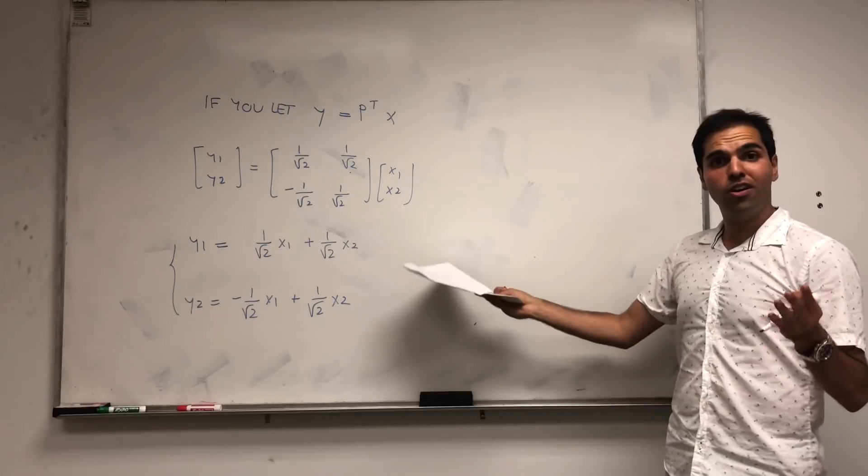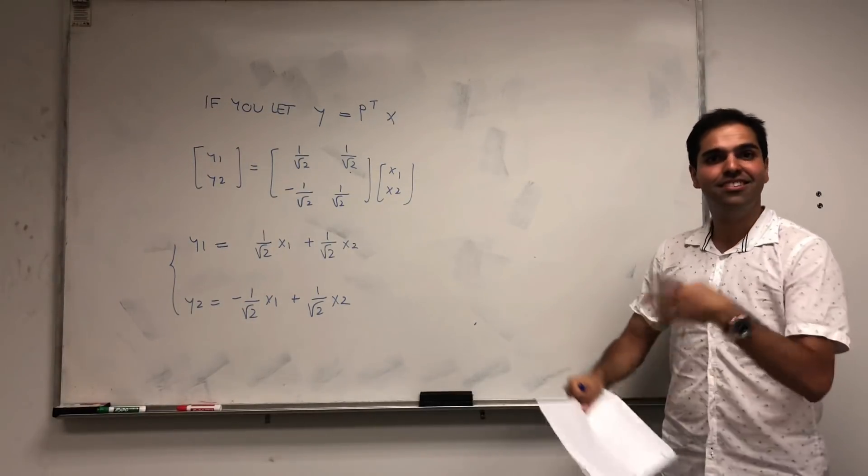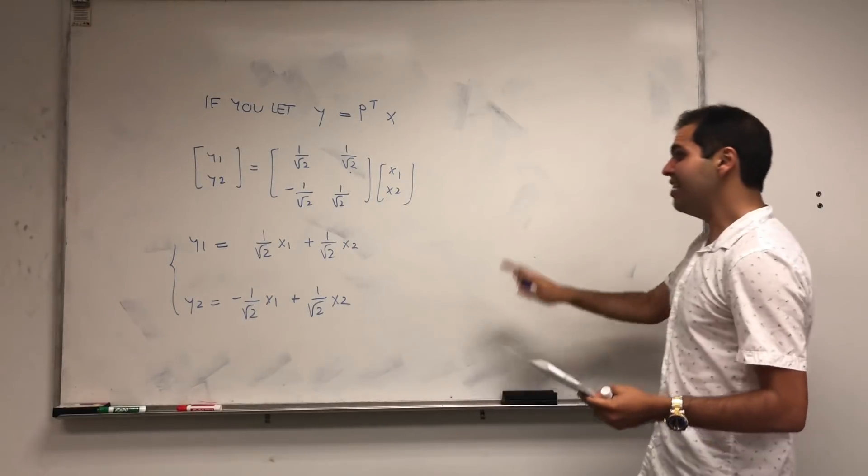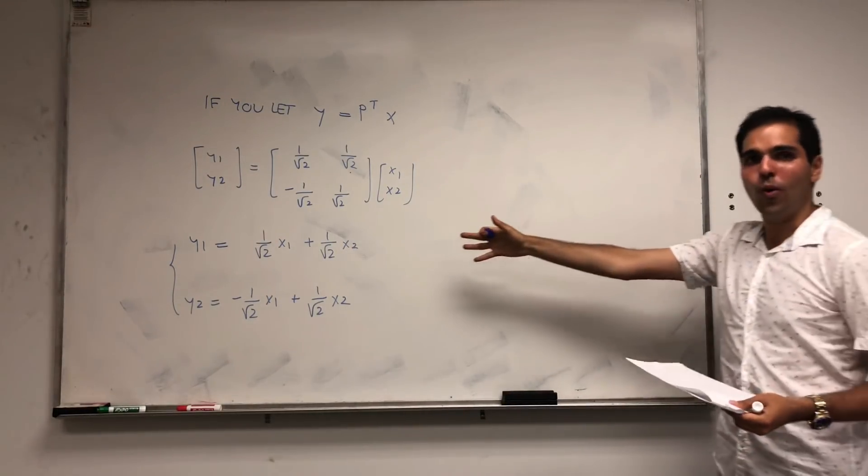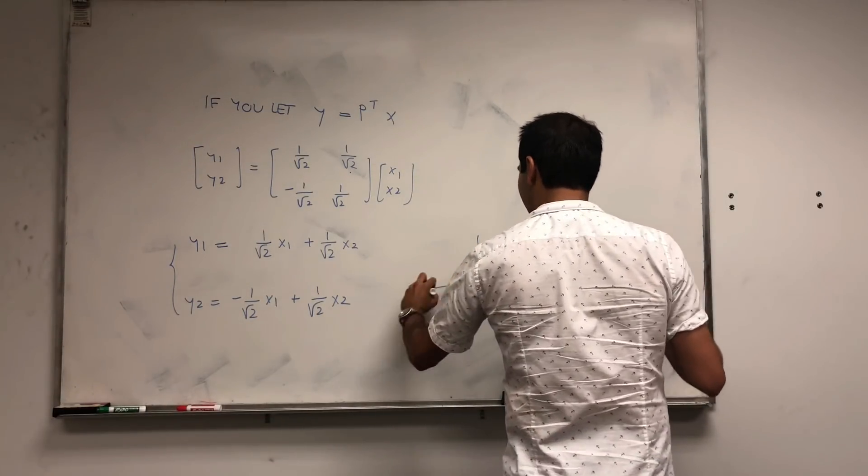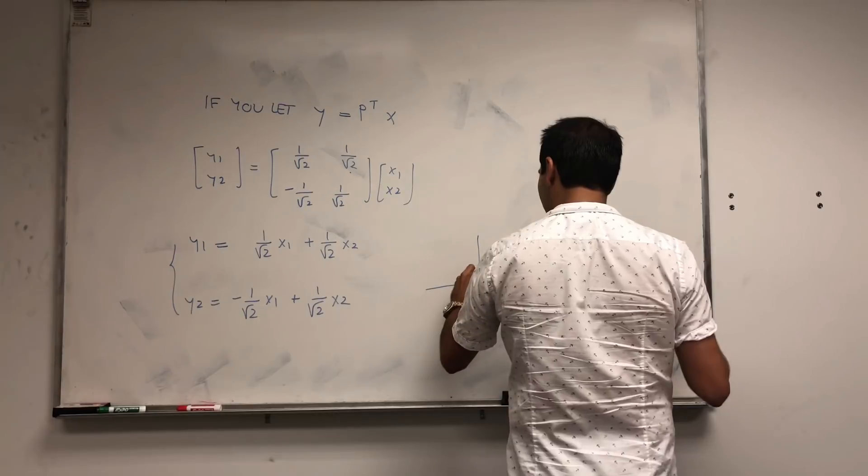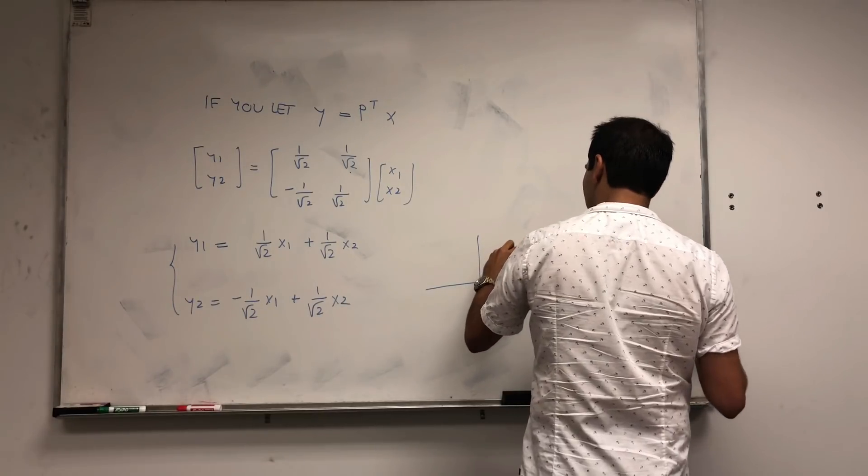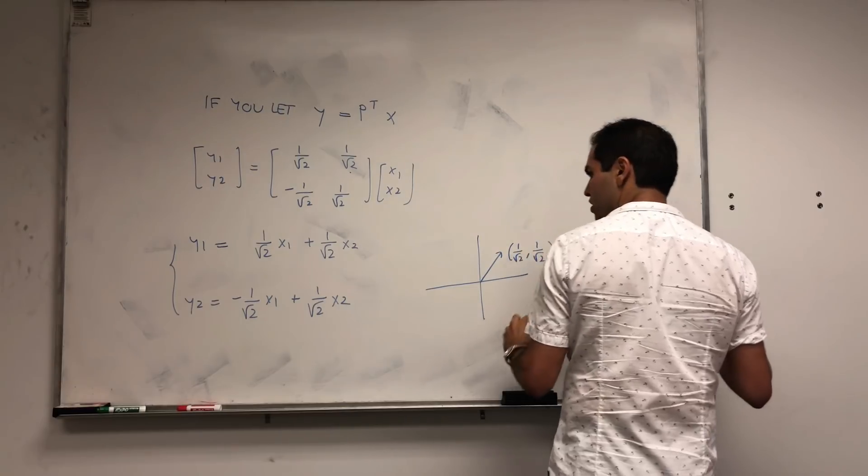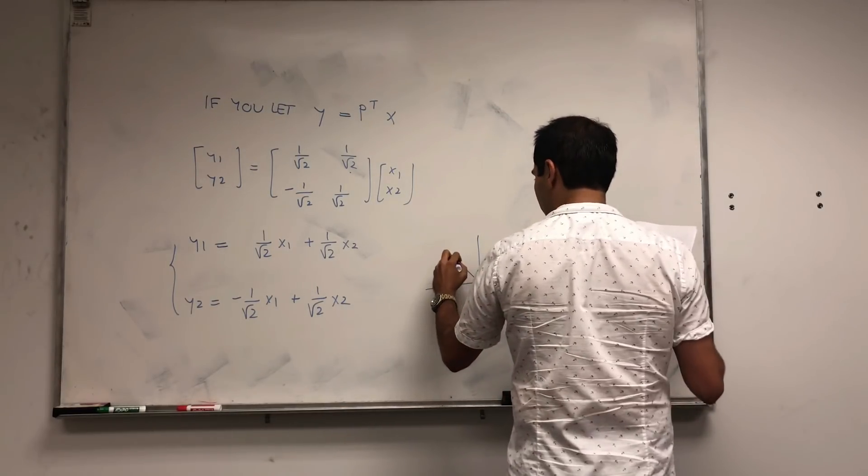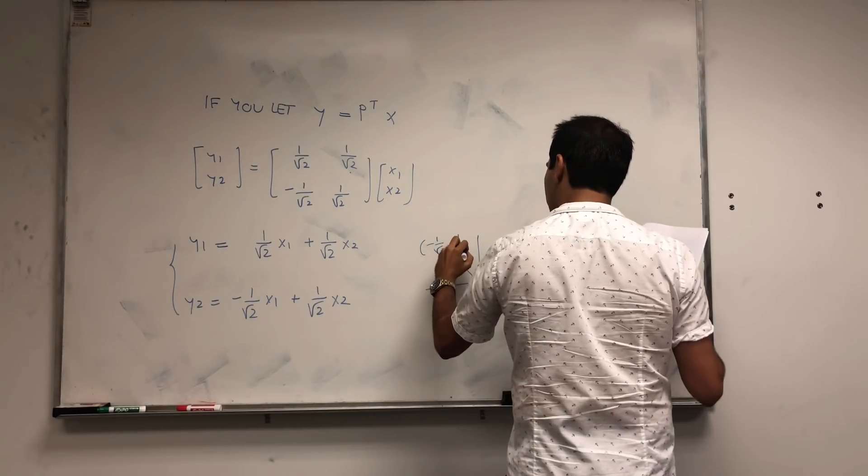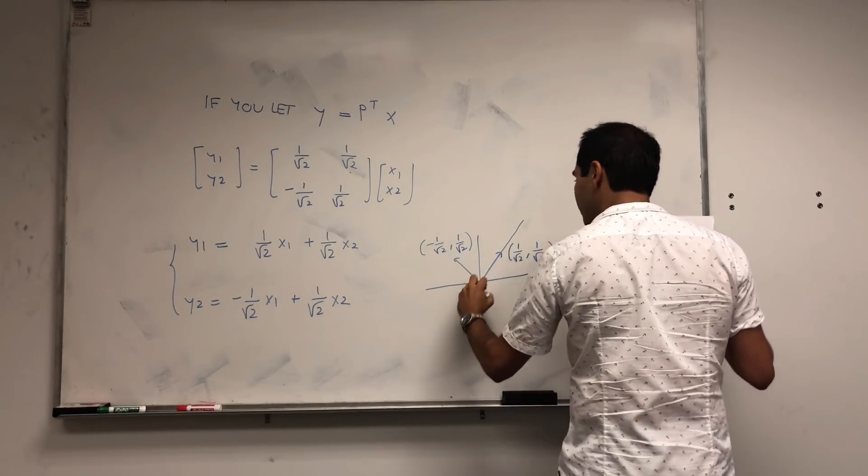And those are what are called principal axes, so I'm just illustrating the principal axis theorem. So in other words, if you're in this new coordinate system, let me draw this. So this is 1 over the square root of 2, 1 over the square root of 2, and the other one is minus 1 over the square root of 2, 1 over the square root of 2. So suppose you have this new axis.